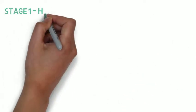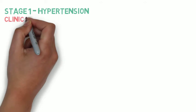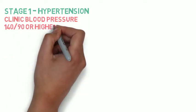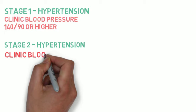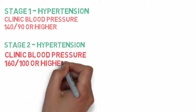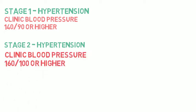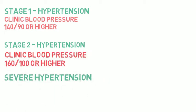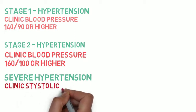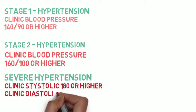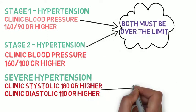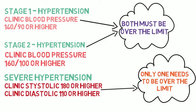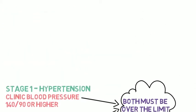Stage 1 hypertension begins when the clinic blood pressure is 140 over 90. Stage 2 hypertension is when the clinic blood pressure is 160 over 100. Severe hypertension is a clinic systolic pressure of 180 or higher, or a clinic diastolic pressure of 110 or higher. To be diagnosed with severe hypertension, only one of these needs to be over the limit.